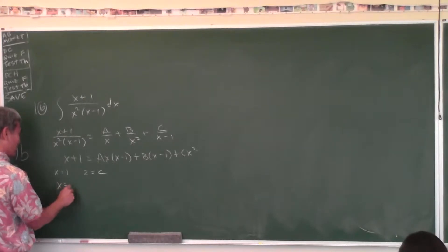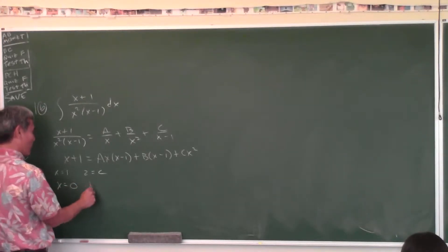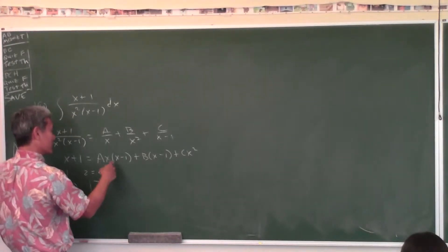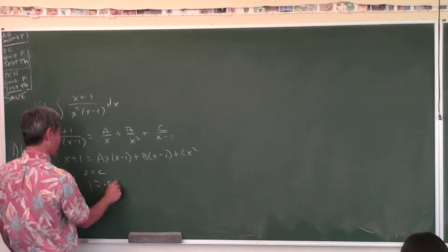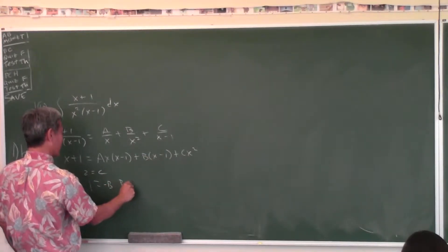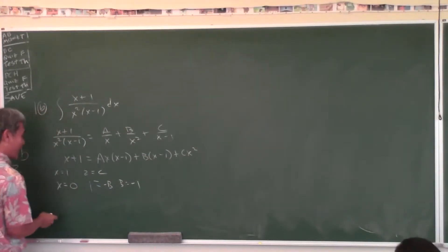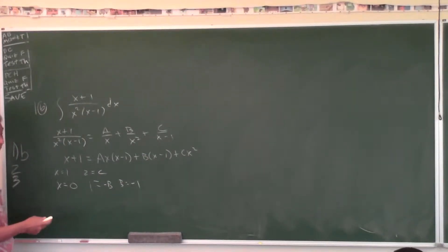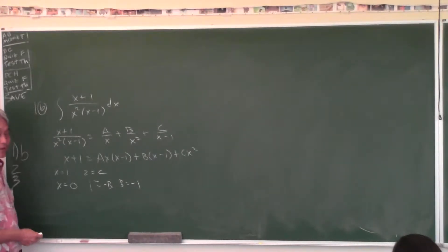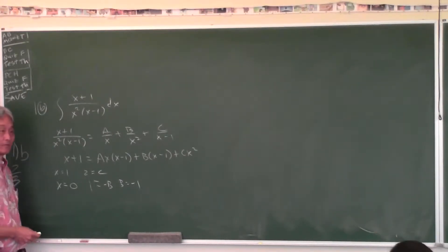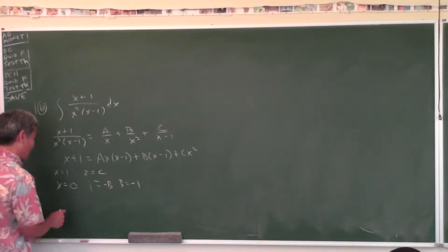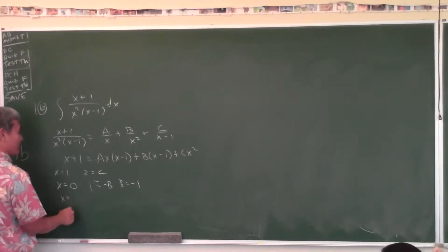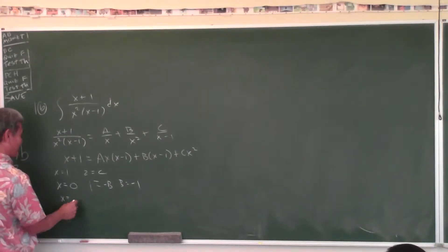Another good number to plug in is 0. You get 1 equals 0 plus 0 plus negative B, so B equals negative 1. I'll plug in 2 next because some of you have problems with negative numbers.